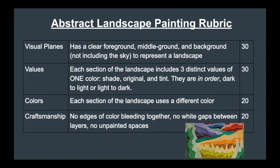And then each section of the landscape should have a different color. So all of the foreground, again, if I use that as an example, if it's all orange, you're going to keep that whole section orange. Then maybe the middle ground is green, and the background is purple.